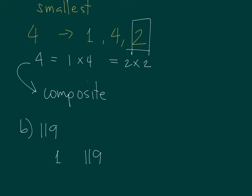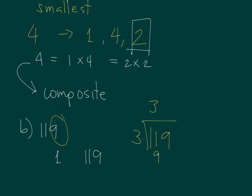Since 119 is an odd number, a possible factor or divisor is also an odd number. It ends with nine, so what numbers can produce a nine? Three times three equals nine, so we check whether 119 is divisible by three. Doing this manually: 119 divided by three — three goes into eleven three times with remainder two, bringing down nine gives 29. Is 29 divisible by three? No — 27 yes, 30 yes, but not 29. So 119 is not divisible by three.